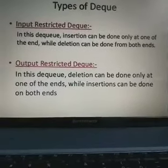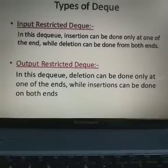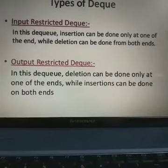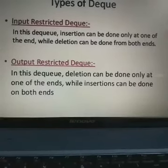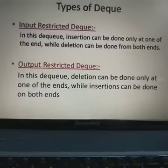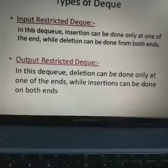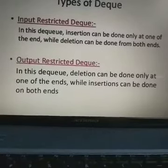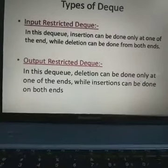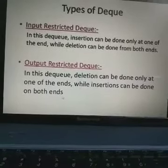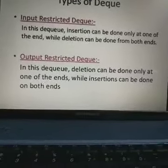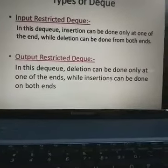Now we have two types of DQ. The first one is the input-restricted DQ and the second one is the output-restricted DQ. In the input-restricted DQ, insertion can be done only at one end while deletion can be done from both ends. Input-restricted means we can insert a value only on one side. In the output-restricted DQ, deletion can be done only at one end while insertion can be done from both ends.